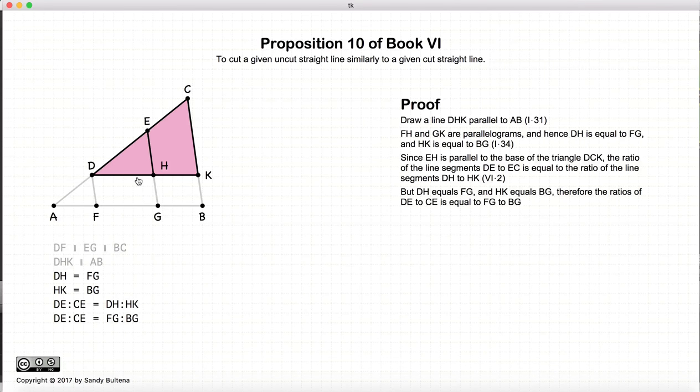Well, since DH is equal to FG and HK is equal to GB, we basically take DH and replace it with FG, and take HK and replace it with BG, and we end up that DE to EC is equal to FG to BG.